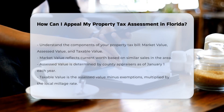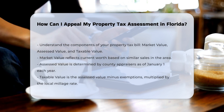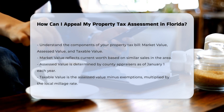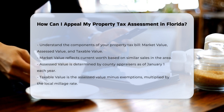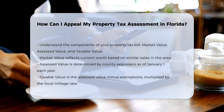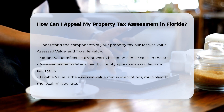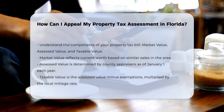To start the appeal process, it's crucial to understand the components of your property tax bill. Your property tax is based on three key values: market value, assessed value, and taxable value. The market value reflects the current worth of your property based on similar sales in the area. The assessed value is determined by county appraisers as of January 1st each year. The taxable value is the assessed value minus any applicable exemptions, multiplied by the local millage rate.